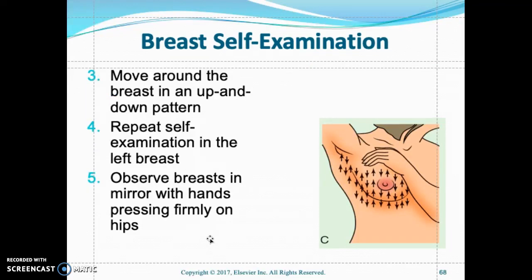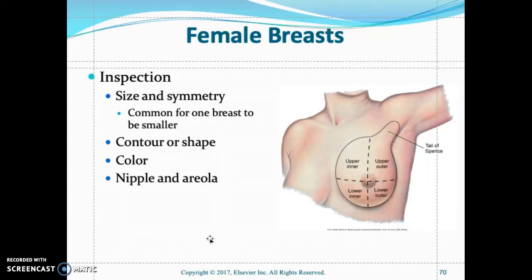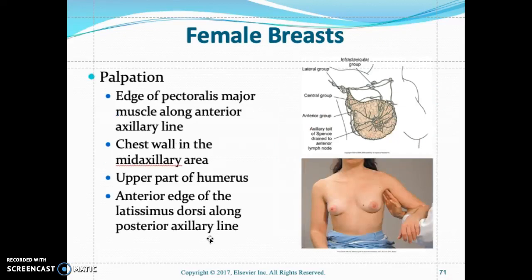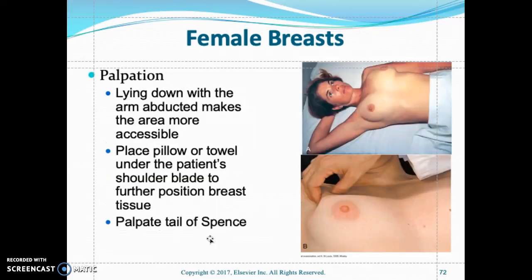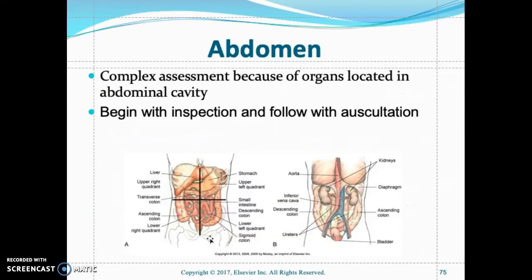Move around the breast in an up-and-down pattern, then repeat the self-examination on the left breast. Observe the breasts in the mirror with hands pressing firmly on the hips. Look at the size of the breasts for symmetry, look at the contour, and look at the nipples for any discharge, redness, or discoloration. Check the axillary walls in the mid-axillary area. The patient should be lying down with a pillow or towel under the shoulder blades. Palpate the tail of Spence.